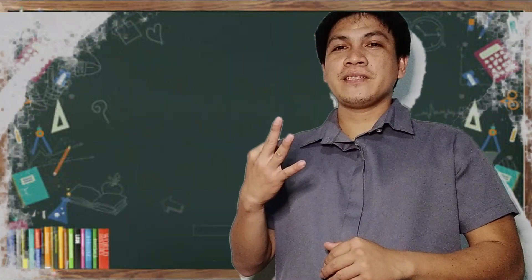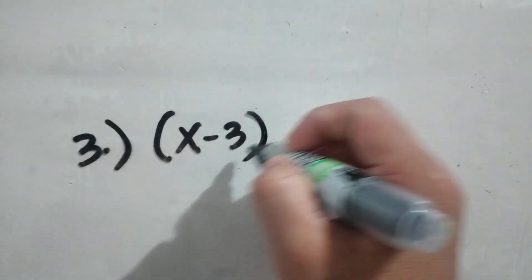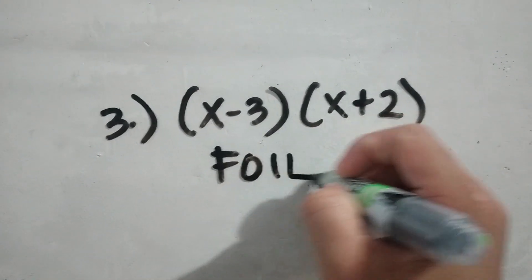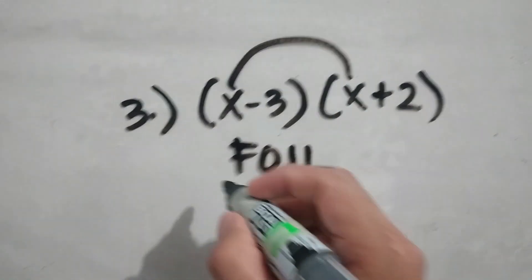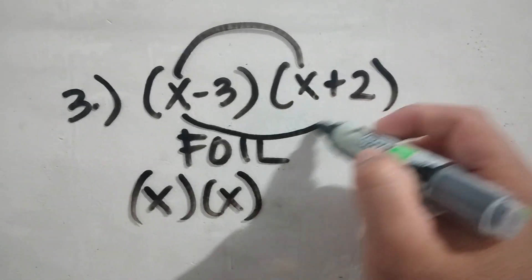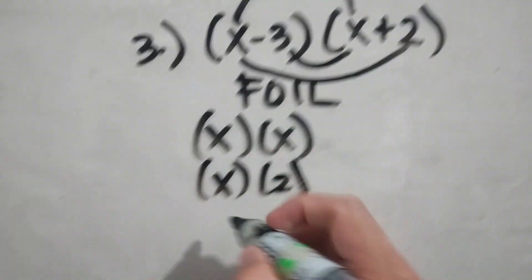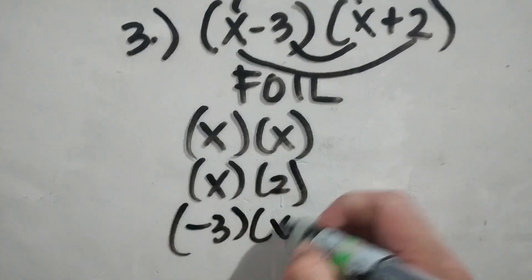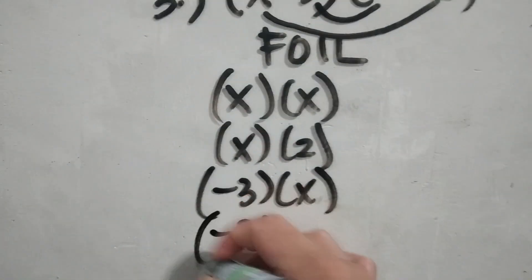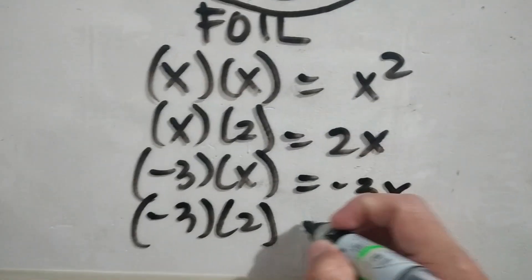Number three. x minus 3 times x plus 2. We are just going to apply FOIL method. Remember FOIL method? First term, outer, inner, and last term. So let us try to find the product. First term is x times x. Outer is x times positive 2. Inner is negative 3 times x. And last term is negative 3 times positive 2. So what do you think is the product? Very good.